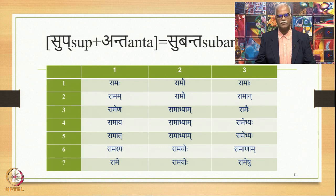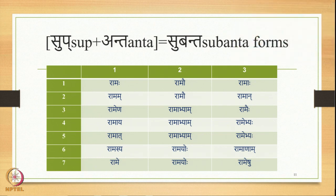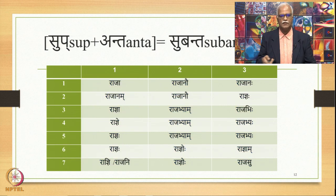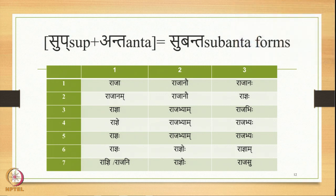These are called Subantas because there is a Sub coming at the end. Ramaha has Rama as the Pratipadika and Aha (Su) at the end. Ramam has Rama as Pratipadika and Am coming at the end. So all these are Subantas, part of the data set seen earlier. We also have Subantas of this kind, which we will study in detail in today's lecture.